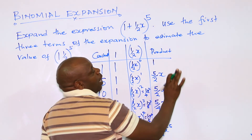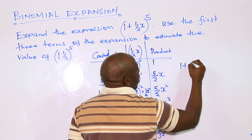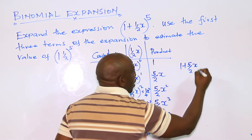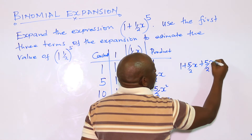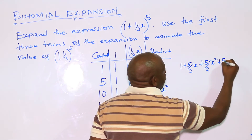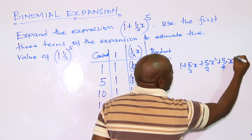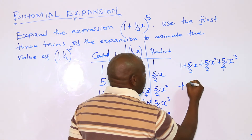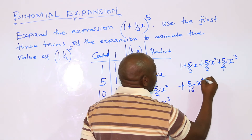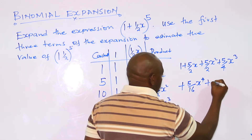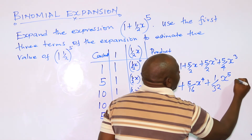Once you have gotten this, you must now translate your answer to get: 1 + 5/2 x + 5/2 x² + 5/4 x³ + 5/16 x⁴ + 1/32 x⁵.